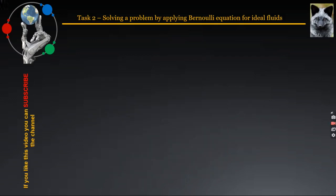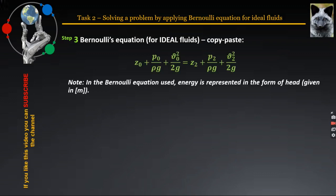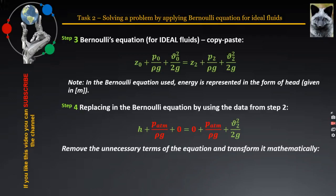Performing the third step involves copying and pasting Bernoulli's equation for an ideal fluid on your paper sheet, as demonstrated on the slide. Note that in Bernoulli's equation in the form we use it, energy is represented in the form of H. It is now time to move forward to step 4, which involves substituting the data from step 2 into Bernoulli's equation. I advise always making the initial substitution alphabetical rather than numerical, as presented on the slide. The parameters marked in red are to be removed, which leads to the equation being simplified, and the final equation is obtained.